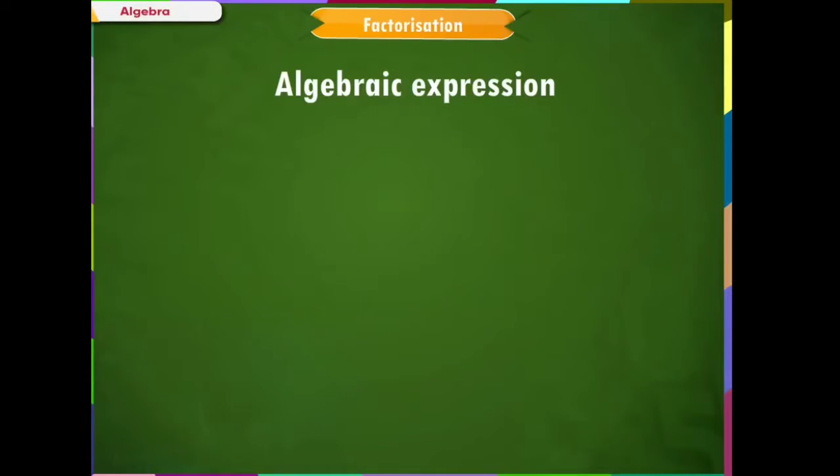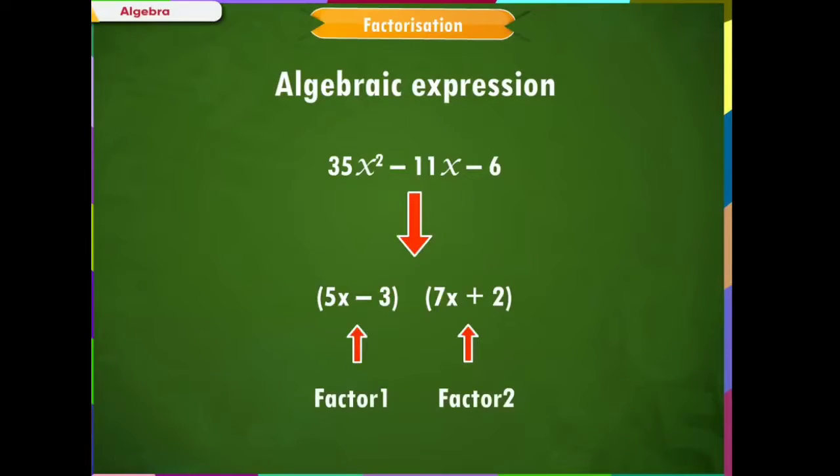When a given algebraic expression is the product of two or more algebraic expressions, each of the expressions is called a factor of the given expression. The process of finding these factors is called factorization. We will learn about the different methods of factorizing an algebraic expression.